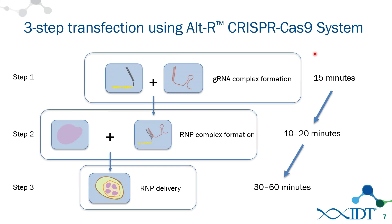Here's a schematic of the CRISPR-Cas9 RNP system. The first step is guide RNA complex formation: combine the CRISPR RNA with the tracer RNA and perform a heat-cool cycle in a PCR tube or Eppendorf tube, allowing the two components to hybridize. Once formed, Cas9 is added to create the functional ribonucleoprotein complex. These two steps take about half an hour. The final step is delivery of the RNP into the cell, which we'll cover in the second half of the talk.